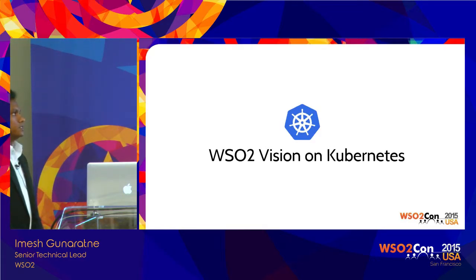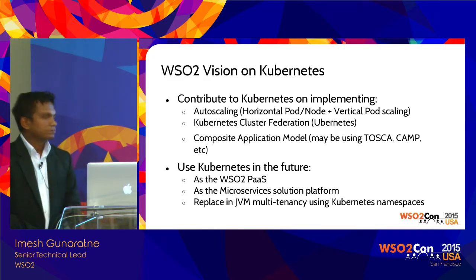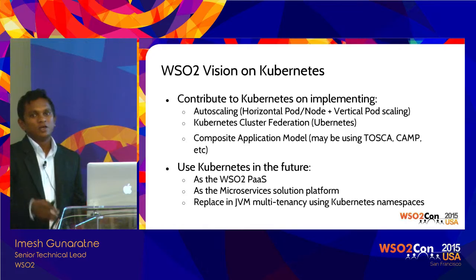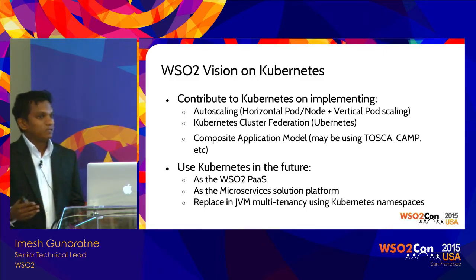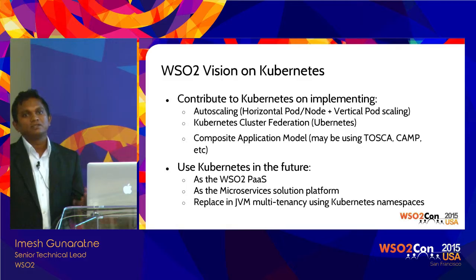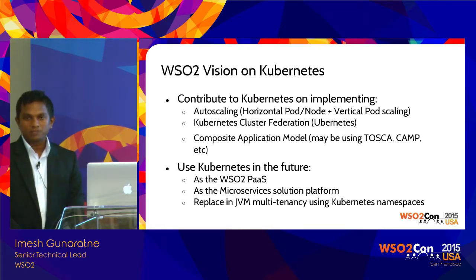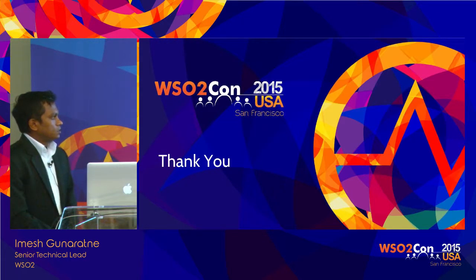The WSO2 vision on Kubernetes is to use Kubernetes directly as WSO2 PaaS. The reason is that Kubernetes is being developed very rapidly, and the same set of features implemented in Stratos over many years are now being implemented in Kubernetes — raising the question of whether there is any point in implementing them again in another layer. In the future, we may use Kubernetes as WSO2 PaaS. Yesterday we did a POC demo on how to run WSO2 ESB with all these features on Kubernetes directly, without Private PaaS.